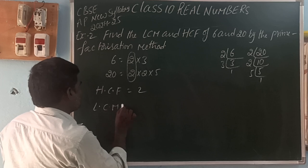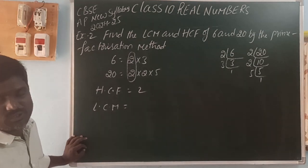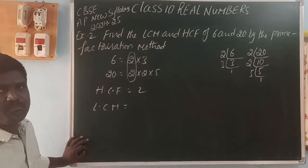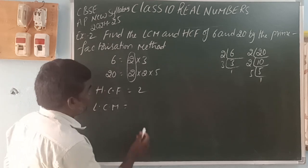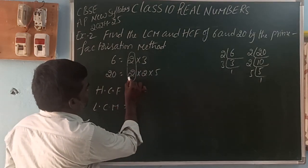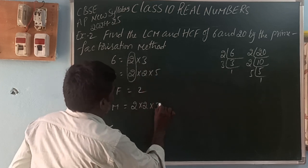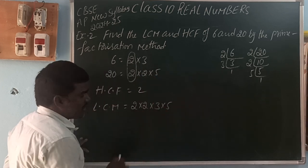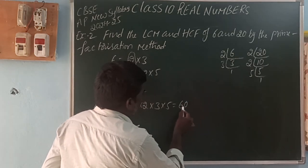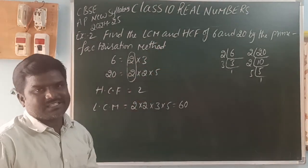For LCM using the prime factors method, take the highest multiple of all prime factors. The prime factors present are 2, 3, and 5. The factor 2 appears 1 time in 6 and 2 times in 20 — take 2 times. Then 3 appears once, and 5 appears once. So LCM = 2 into 2 into 3 into 5 = 4 into 3 into 5 = 60. Therefore LCM is 60 and HCF is 2 for the numbers 6 and 20.